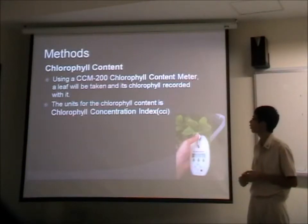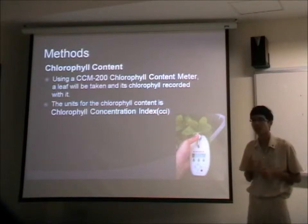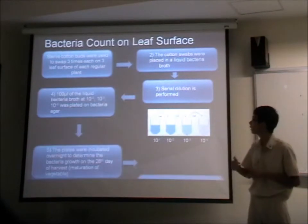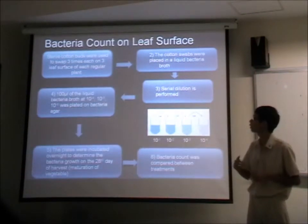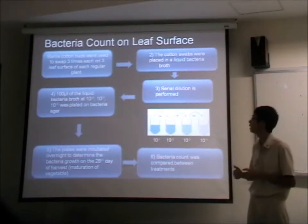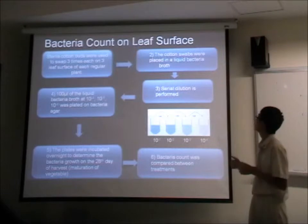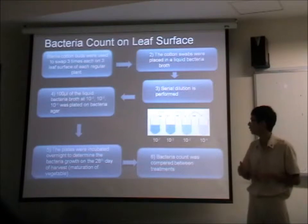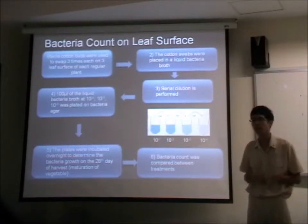To measure the chlorophyll content, we use a device called the CCM-200 chlorophyll content meter, which measures the chlorophyll content of the plants. To measure the bacterial count on the leaf surface, three leaf samples from each replicate plant are placed in bacterial buffer and serial dilutions are performed at concentrations of 10 to the power of 4, 5, and 6, then incubated on bacterial agar plates overnight. After that, a bacterial colony count is made.